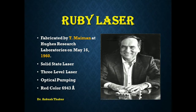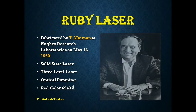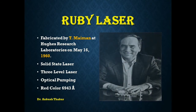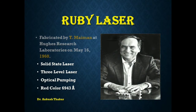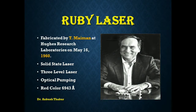Ruby laser was first fabricated in 1960 in Bell Laboratories. Ruby laser is generally a solid-state laser, and it is basically based on the three-level laser system. It requires optical pumping for the excitation of the chromium ions.